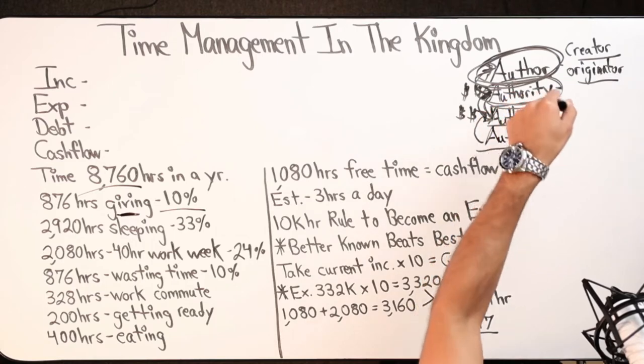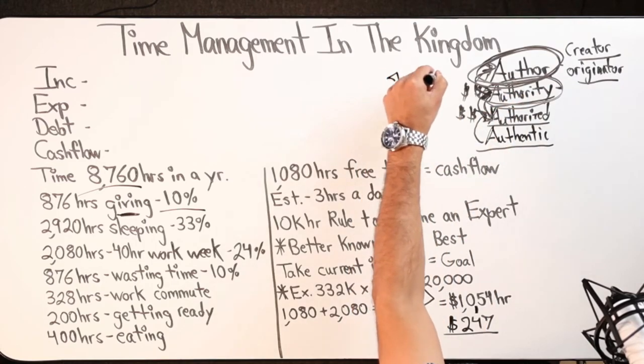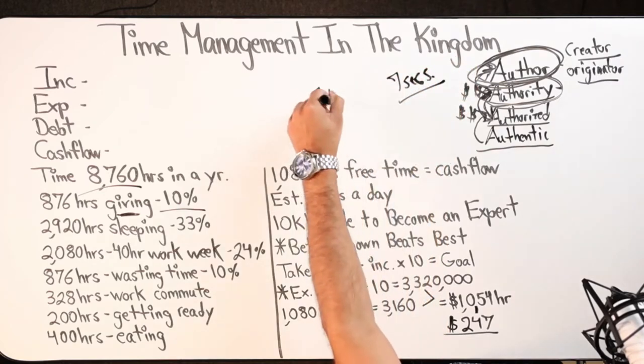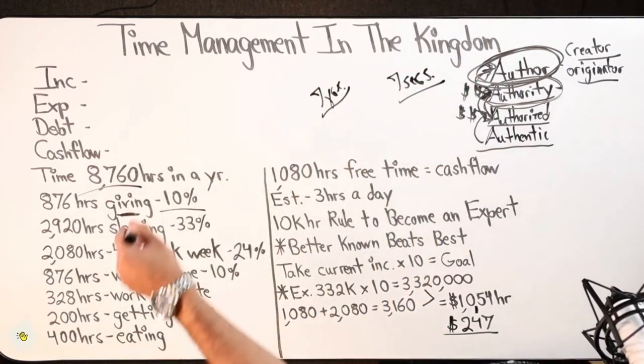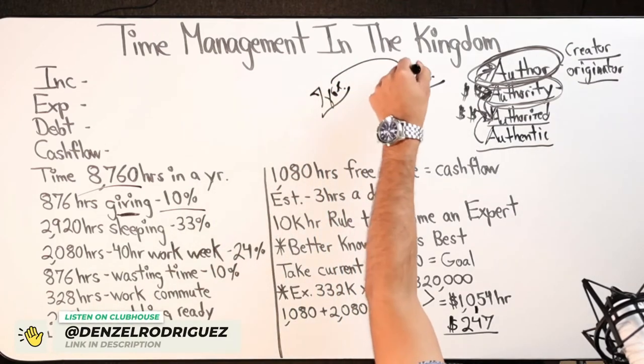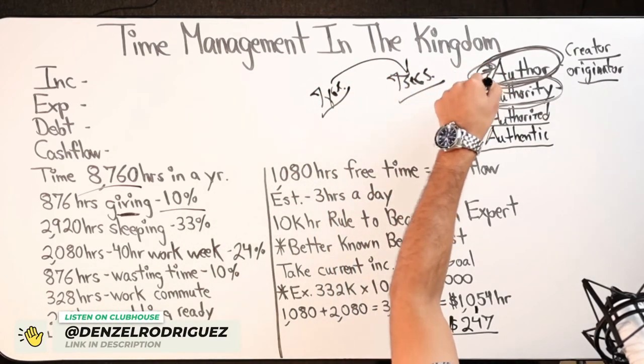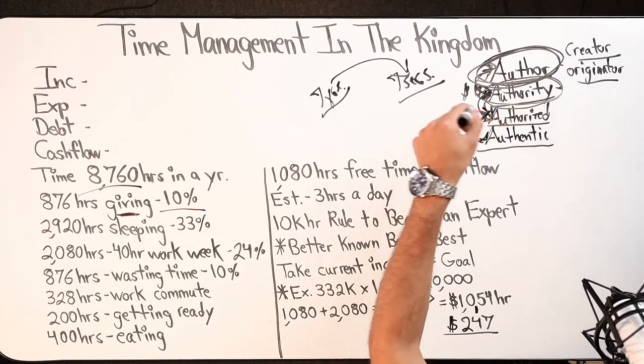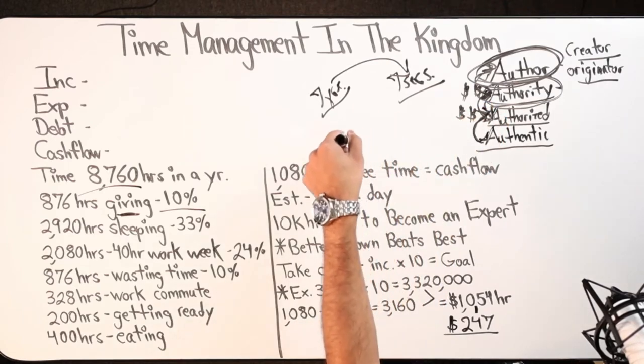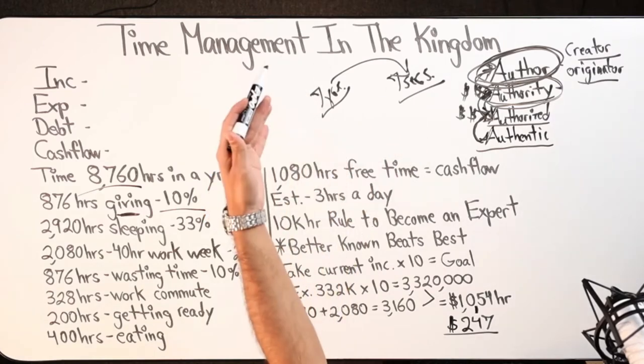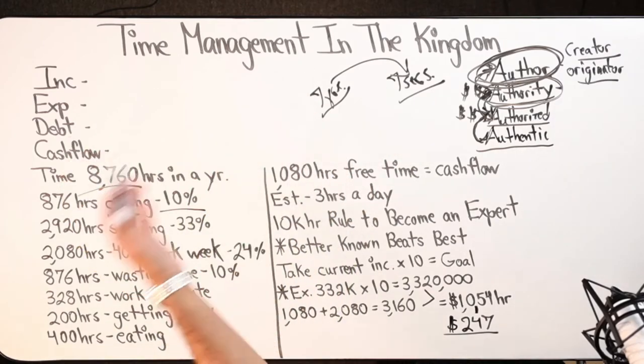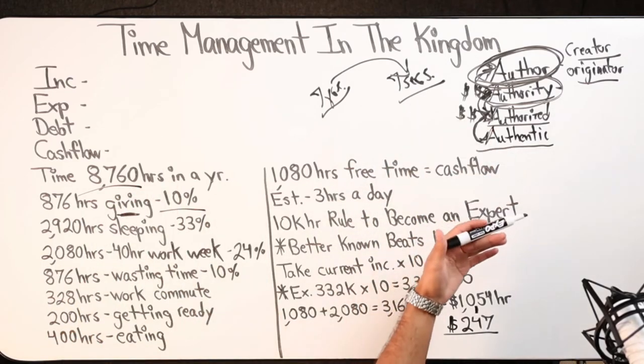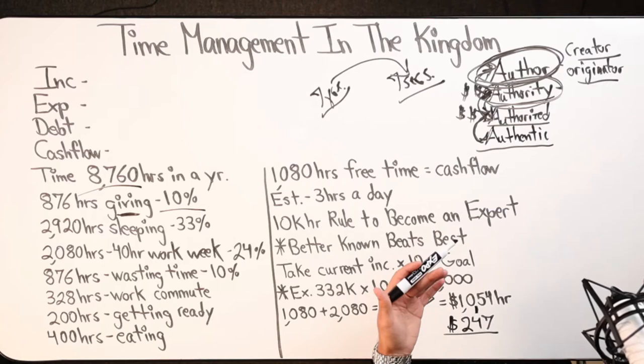And within seven seconds, literally within seven seconds, what would take you seven years to do on your own because you're stubborn, getting in the kingdom within seven seconds you can receive the authority that you need to then be authorized to then authentically preach, share, market, sell the message that it is that you've been authorized with your authority to do.